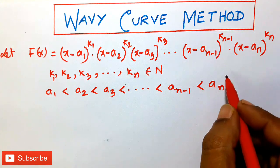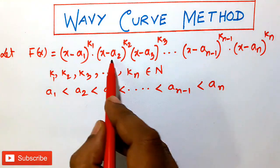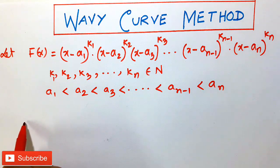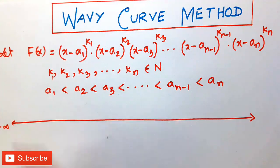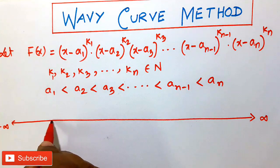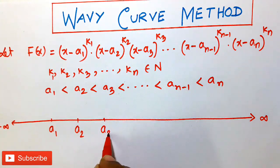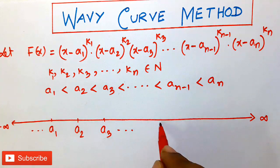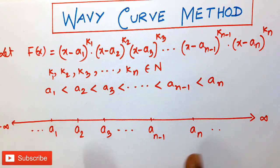First, we mark the numbers a₁, a₂, a₃, ... aₙ on the real axis. These are actually the critical points. On the real axis, we plot them from minus infinity to plus infinity. Let this point be a₁, this point a₂, this point a₃, and so on — continuing to aₙ₋₁ and aₙ. We have plotted n critical points, a₁ to aₙ.